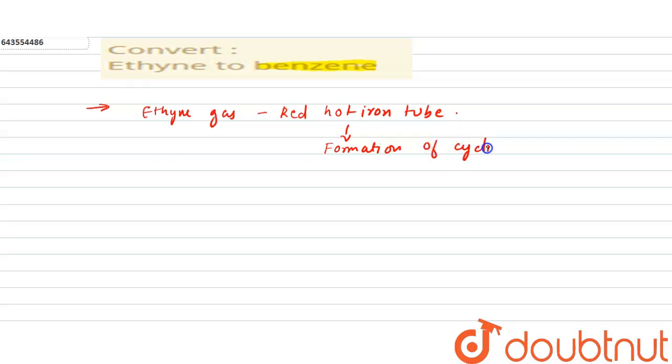Three molecules of ethane gas undergo cyclic polymerization to produce an aromatic compound known as benzene.